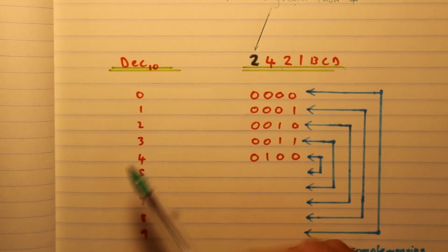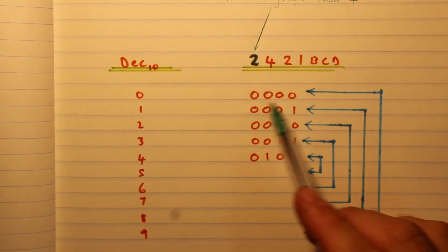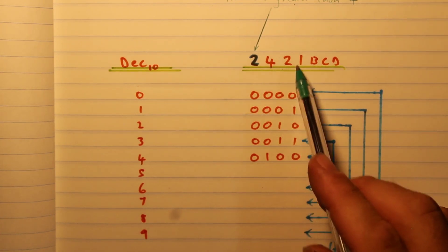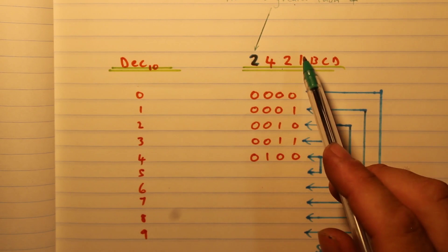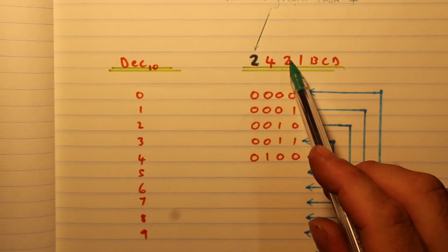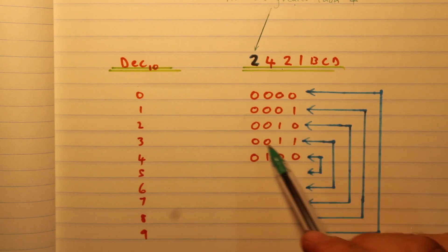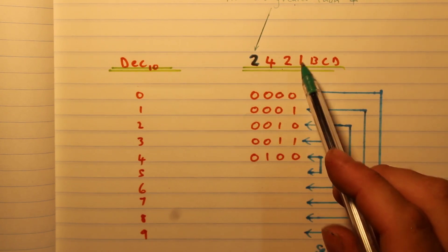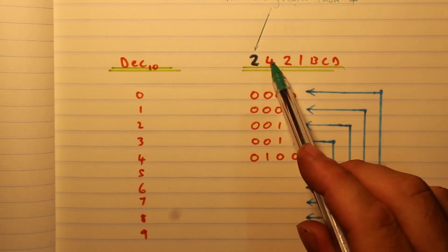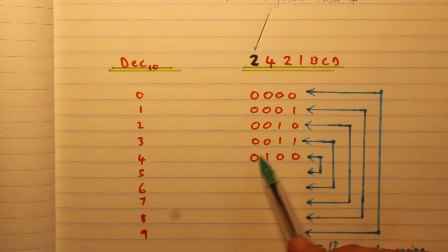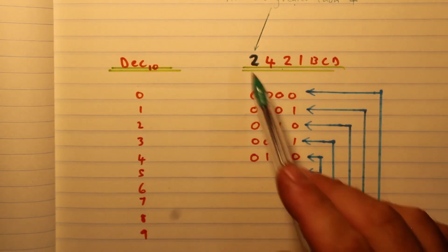From zero to four we don't use that second two, so everything is the same as 8421 BCD. To make zero we don't use any of the bits; to make one we use only the one; to make two we use only the first two; to make three we use the two plus the one; and to make four we use the four.